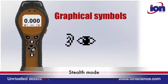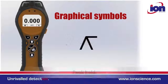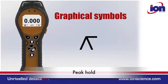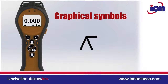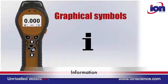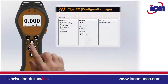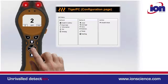Average: this gives an average reading over a 10-second period. Stealth mode: this disables audio and visual alarm indicators, so avoids causing panic if in a public place. Peak hold: when selected, the highest measured reading is held on the display. Information: this is where various useful bits of information are kept, like alarm levels and the type of gas you have selected. To switch off, simply press and hold the enter key.